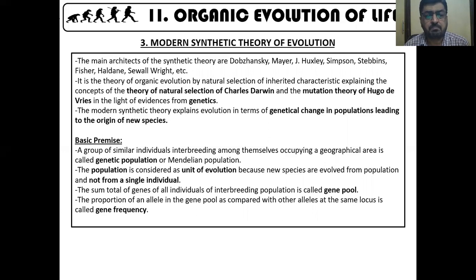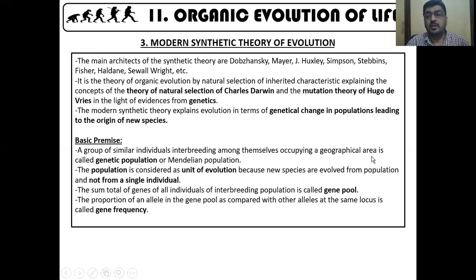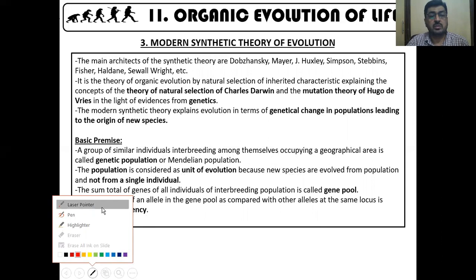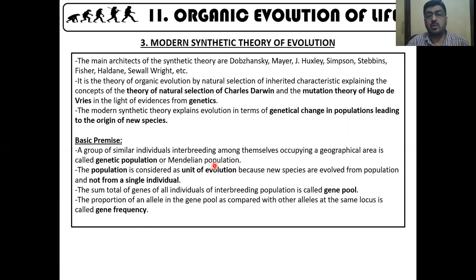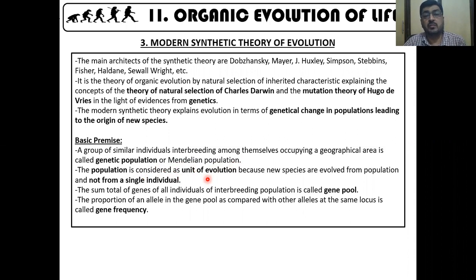Let's look at some key terms first. A genetic population is a group of similar individuals interbreeding amongst themselves. When two organisms can interbreed and occupy a geographical area, that group is called a genetic population or a Mendelian population. Importantly, population is considered the unit of evolution — it is the population which evolves, not the individual.